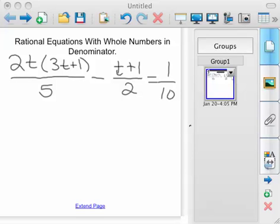So now here we're dealing with a rational equation with whole numbers in the denominator: 5, 2, and 10.